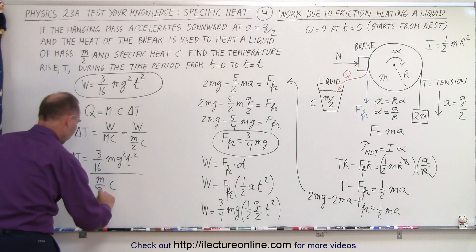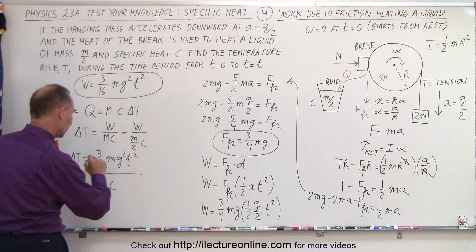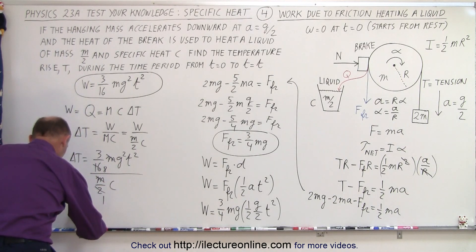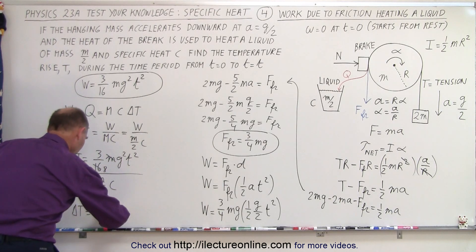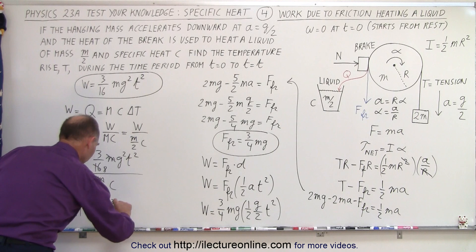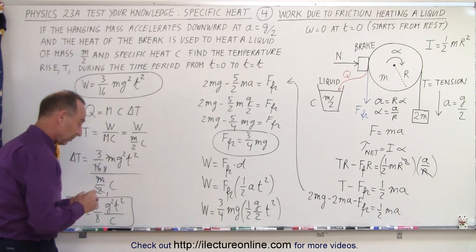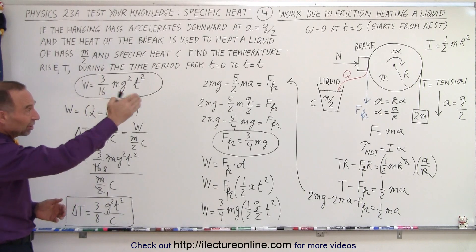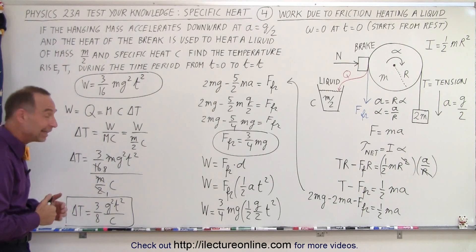The 2 and the 16 simplify, and the m's cancel out, giving us the change in temperature equals 3 over 8 times g squared t squared divided by the specific heat c. The change in temperature from t equals 0 to t equals T of that interesting contraption, when all the heat generated by the brake is placed inside the liquid — and that is how it's done.